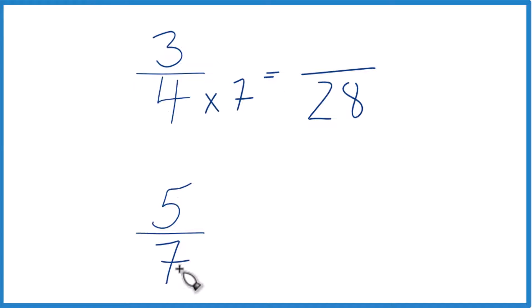And then down here, 7 times 4, that equals 28. So now we have that same denominator. Once we get the numerators, we can just compare them and see if 3 fourths is greater than, equal to, or less than 5 sevenths.